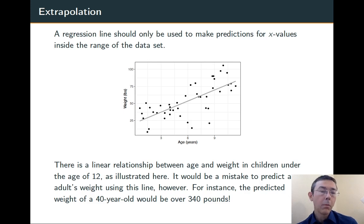That's called interpolation, making predictions based on x values that are within the range of the data set. However, it would be a horrible mistake to try and use this linear relationship to make predictions outside of that range. For instance, if you were to use this linear relationship to predict the weight of a 40-year-old, you'd come up with a value over 340 pounds, which is generally going to be ridiculous. That's called extrapolation, and you should not do it.